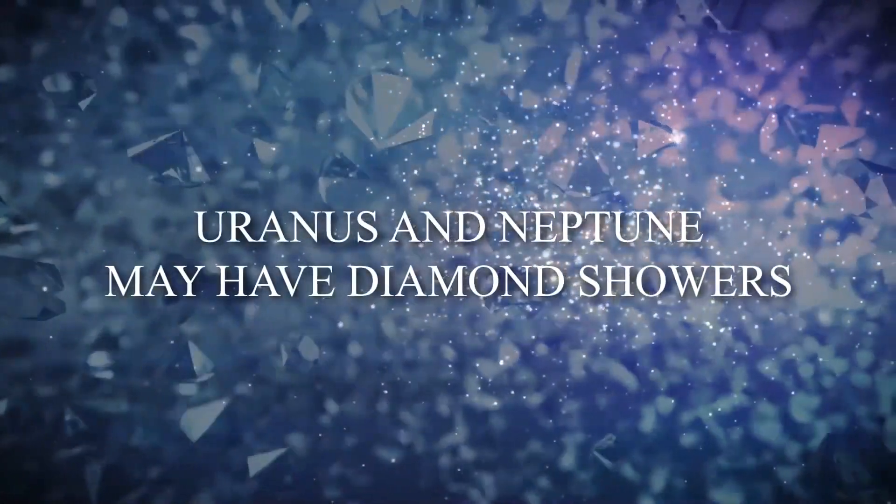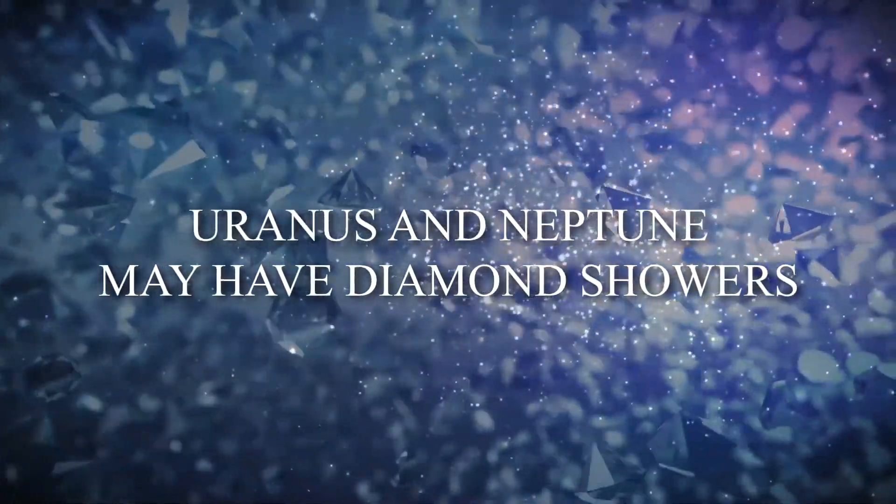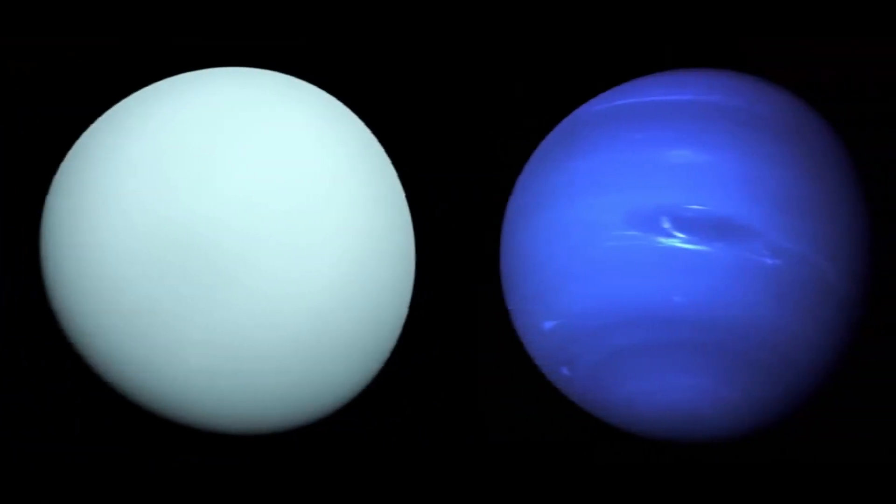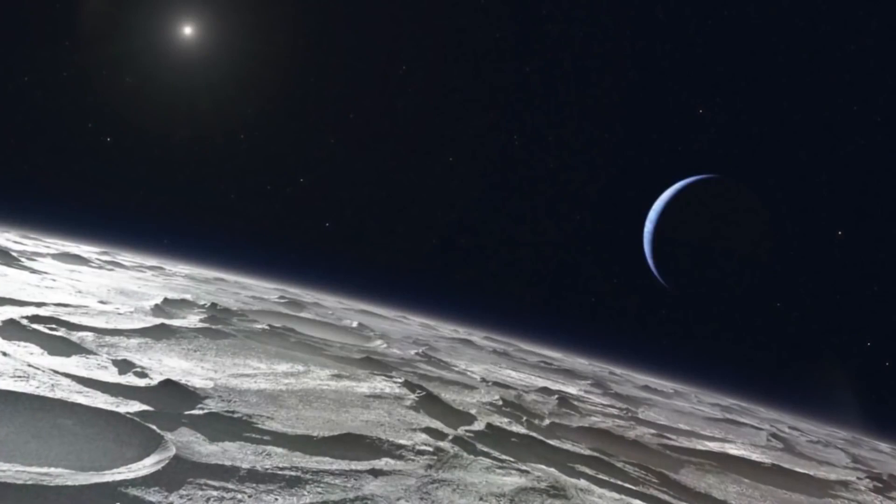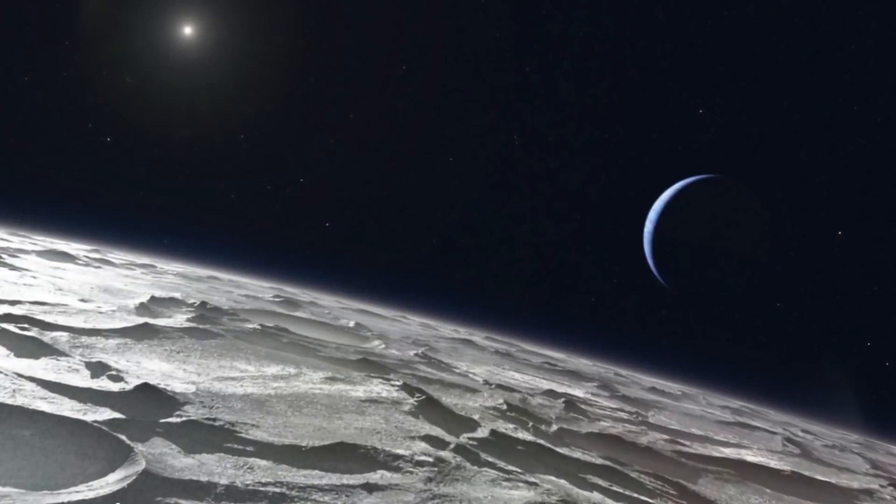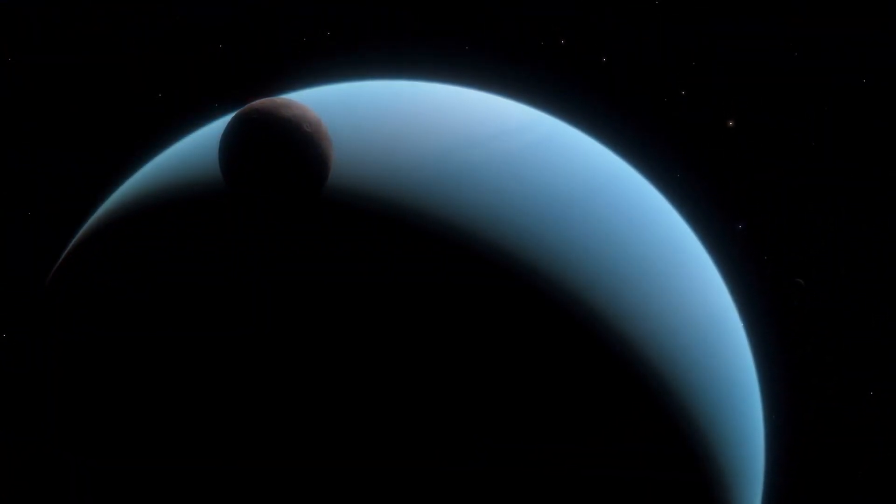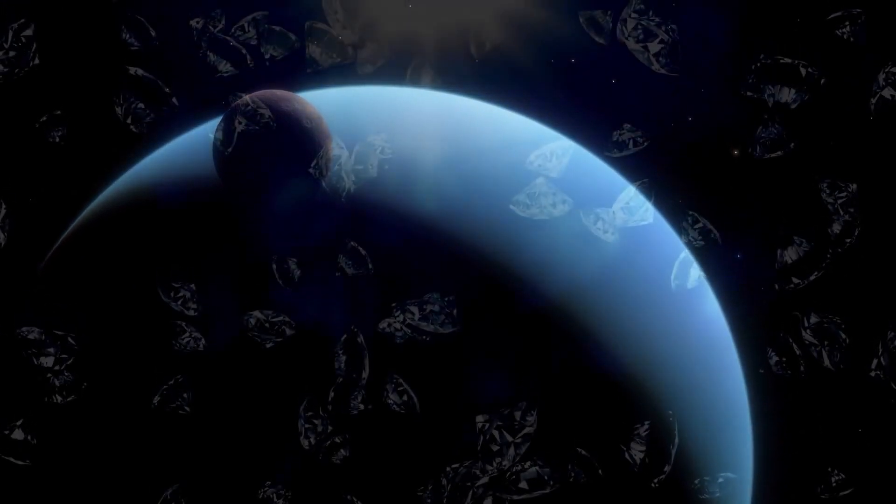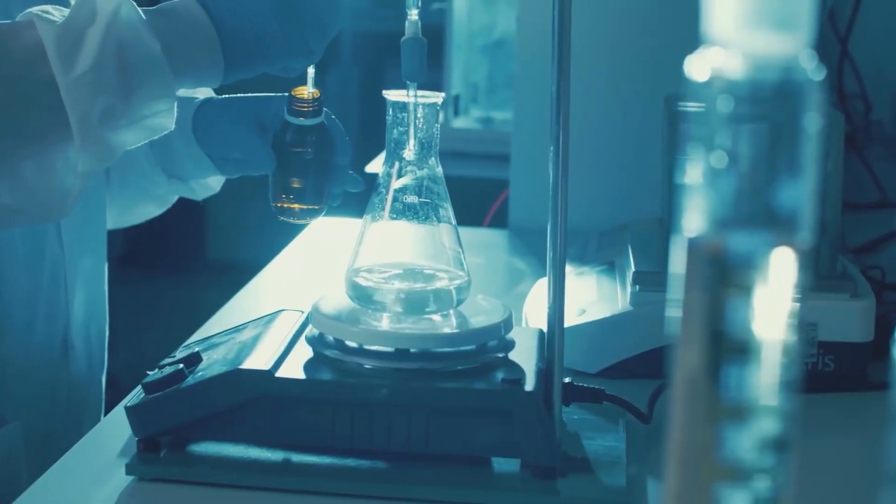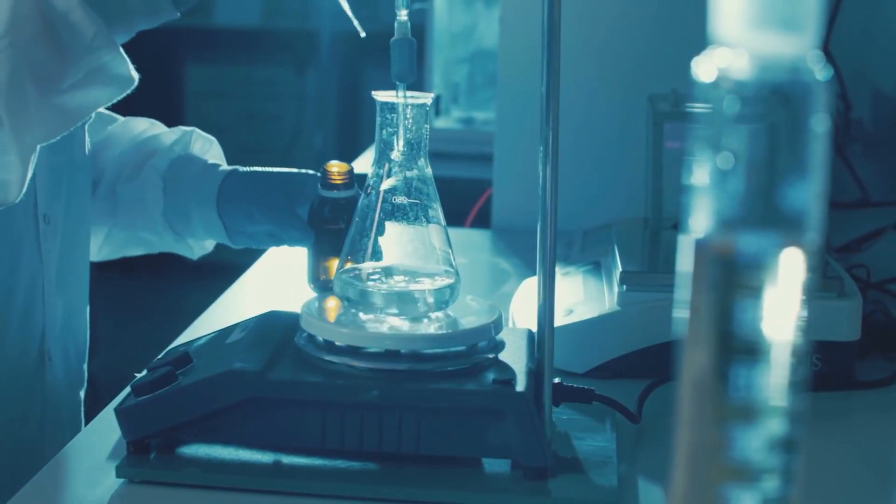Number five: Uranus and Neptune may have diamond showers. These two marvels are believed to have temperatures within their extremely dense atmospheres that go from 3,000 to 12,000 degrees Fahrenheit and pressures from 200,000 to 6 million times those on Earth. But here's the kicker. These conditions are ideal to produce diamonds. Scientists even tested this idea and were able to form these.